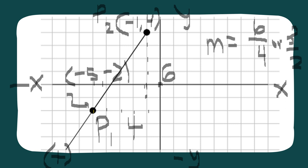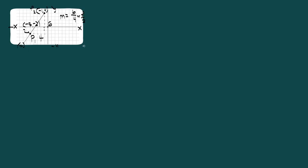Alright, so we can now proceed to solving the equation of a line using standard form, slope-intercept, or two-point slope. Let's solve the equation of a line for example number 1. Our given slope is equal to 3 over 2 — that's the lowest term. And the points we identified: point 1 is negative 5, negative 2, and point 2 is negative 1, positive 4.